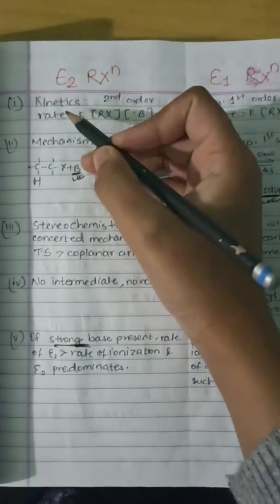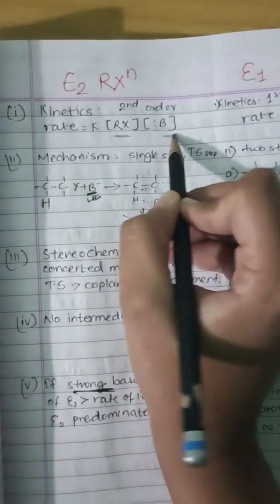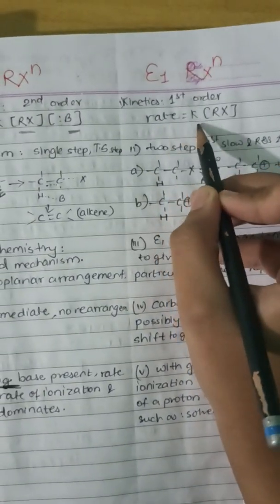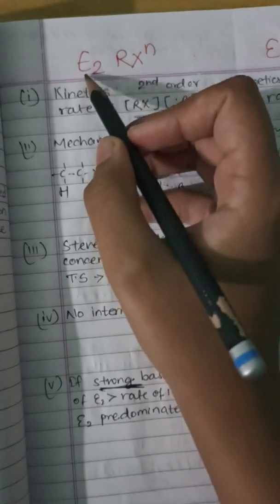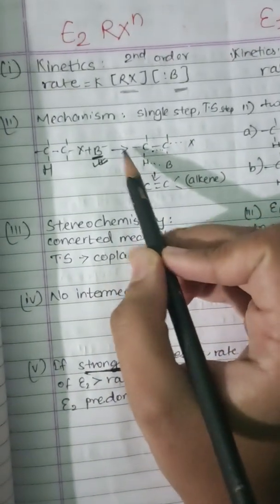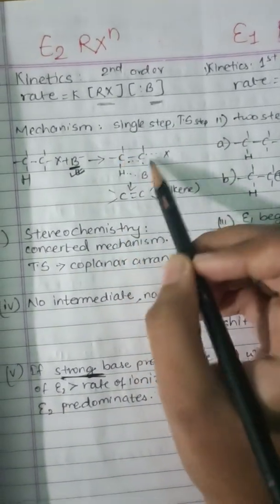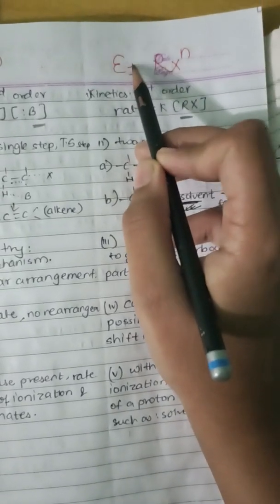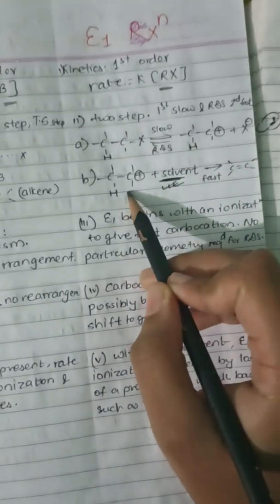Let's start with the difference between E1 and E2. In E2 reaction, second order kinetics are followed. In E1 reaction, first order kinetics are followed. So for E2, the rate of reaction is dependent on the concentration of both the substrate and the base. The mechanism is similar to SN2 — it is a single concerted step, completing the reaction in one step through a transition state. But E1 reaction follows first order kinetics in two steps — the first step is carbocation formation, similar to SN1, and the second step is alkene formation.